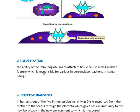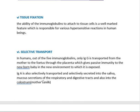Then tissue fixation: the ability of immunoglobulins to attach to tissue cells is a well-marked feature responsible for various hypersensitive reactions in human beings. For example, if IgE antibody binds to the membrane of mast cells or basophils, it leads to degranulation of those cells, which is beneficial but at the same time causes cell rupture. This is the involvement of tissue fixation.